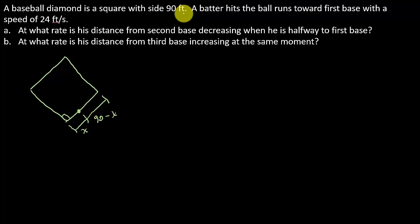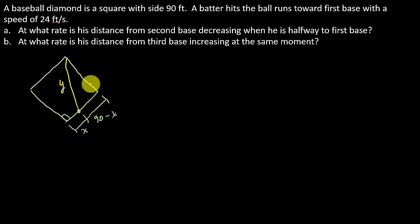Now, what do we want to know? At what rate is his distance from second base decreasing? So his distance — the distance from him to second base — let's draw that in with a different color and call it Y. We can call it anything we want. We also know that this is a right angle, and this side is 90 feet.